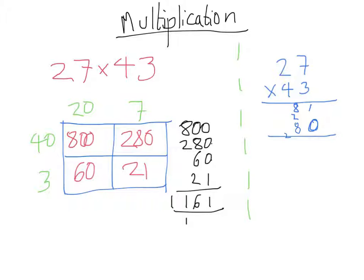To finish this off, we're going to add up the two numbers: 81 add 1080. So 1 add 0 is 1, 8 add 8 is 16 carry the 1, 0 add 1 is 1, giving us 1161. You should notice these two answers are the same.